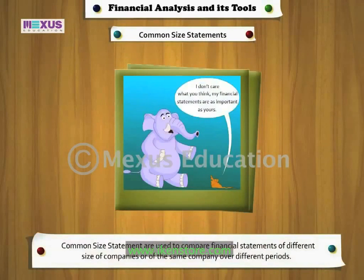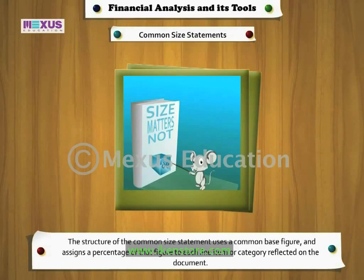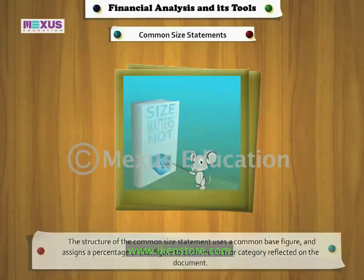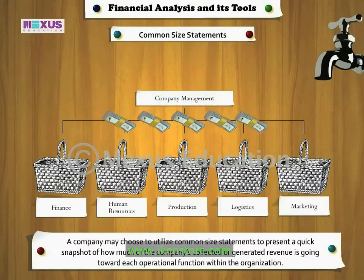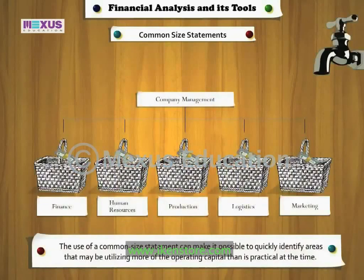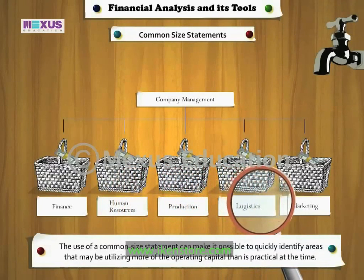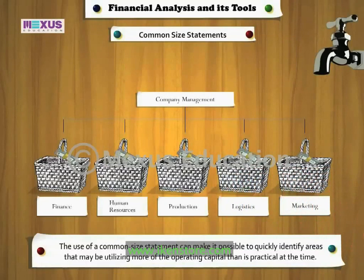Common size statements are used to compare financial statements of different size companies, or the same company over different periods. The common size statement does not reflect exact figures for each line item. Instead, it uses a common base figure and assigns a percentage of that figure to each line item or category. A company may use this type of statement to present a quick snapshot of how much of the collected or generated revenue is going towards each operational function within the organization, helping to identify areas utilizing more operating capital than is practical.